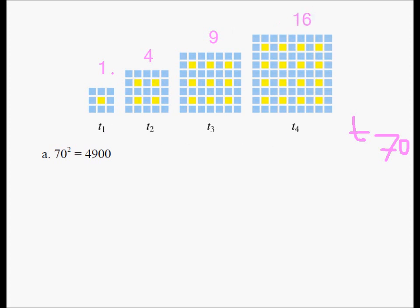What is the relationship between 1 and 1, 2 and 4, 3 and 9, 4 and 16? You are squaring these numbers: 1 squared is 1, 2 squared is 4, 3 squared is 9, 4 squared is 16. So the 70th tile will have 70 squared, or 4,900 yellow squares for the 70th smallest tile.